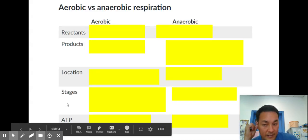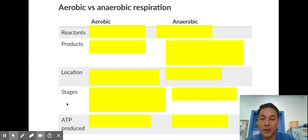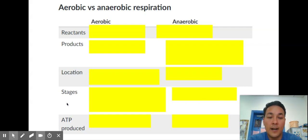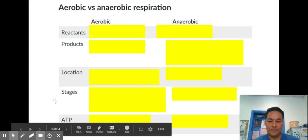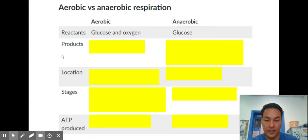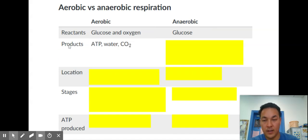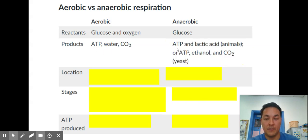This chart is straight from Khan Academy — I thought it was really good. Why don't you pause the video and see if you can get the reactants, products, locations, stages, and the amount of ATP produced? For aerobic respiration, you're taking glucose and oxygen. Anaerobic is just glucose — remember, no oxygen. The products of aerobic respiration are energy, water, and carbon dioxide. For anaerobic it's energy, ATP, lactic acid in animals, and ethanol, carbon dioxide, and ATP in yeast.